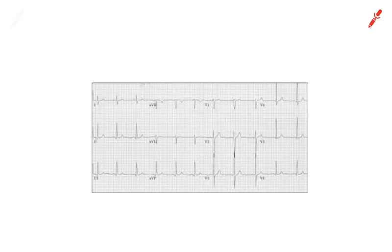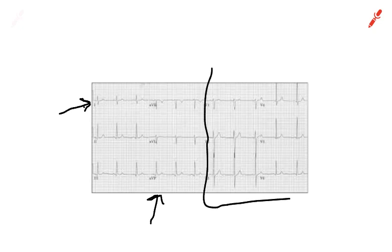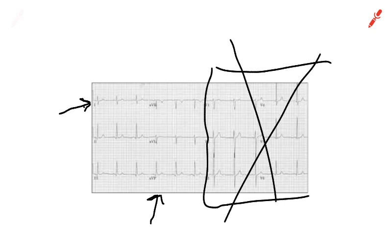Whenever you want to find the axis deviation, always look at Lead 1 and Lead AVF. Do not look anywhere else — if you look anywhere else, you'll get totally wrong even if you have the concept right. And never look at the precordial leads when you're trying to find axis deviation or mean axis angle. Only look at those when you're looking for the transition zone, or left ventricular hypertrophy or right ventricular hypertrophy, which will be in the limb leads. You only want to look at Lead 1 and Lead AVF.